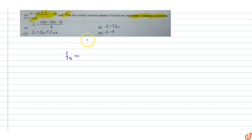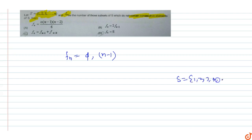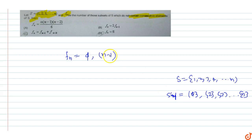f(n) will include the empty set, which is 1, and then the single element subsets. Our elements are 1, 2, 3, 4, up to n. So the number of single element subsets is n.